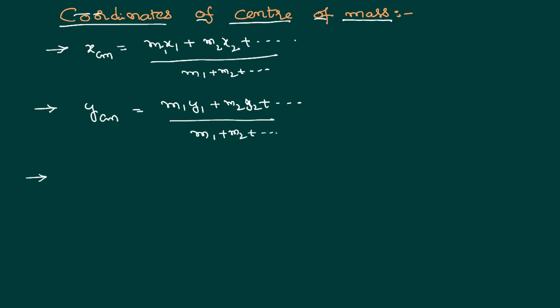Suppose if the system is in three dimension, then it will have not only Xcm and Ycm, it will also have Zcm. We can write Zcm as M1z1 plus M2z2 and so on divided by M1 plus M2 plus and so on.